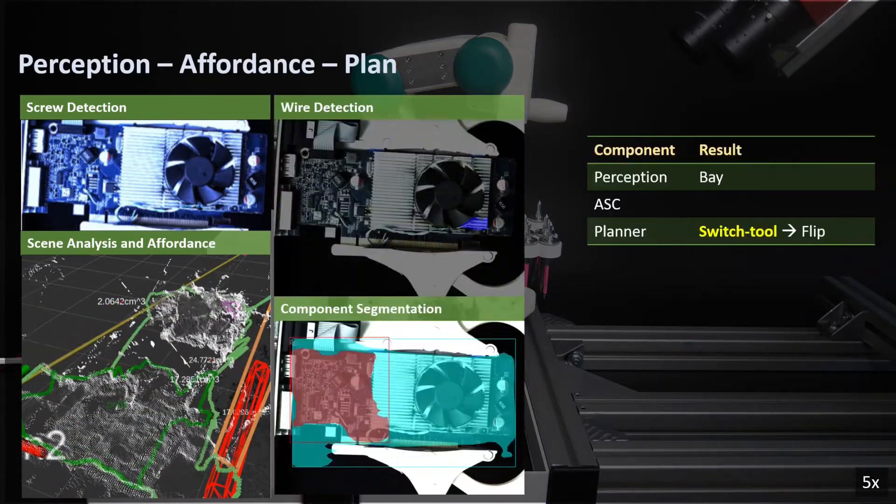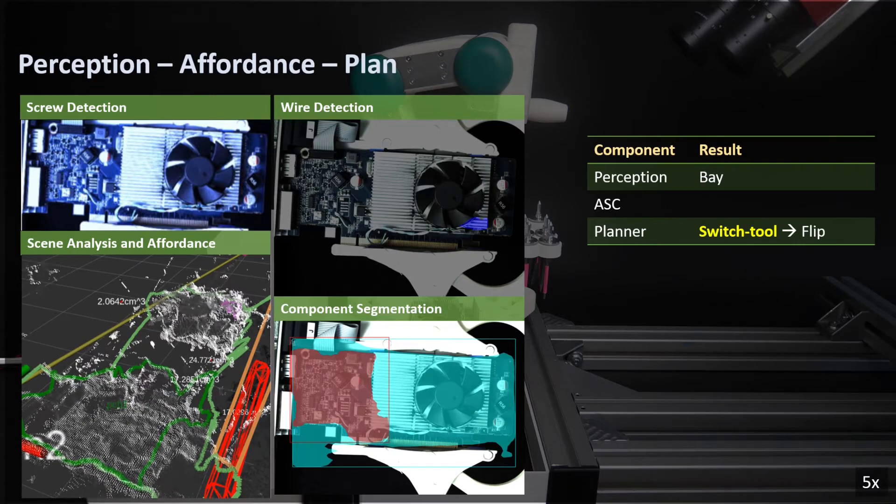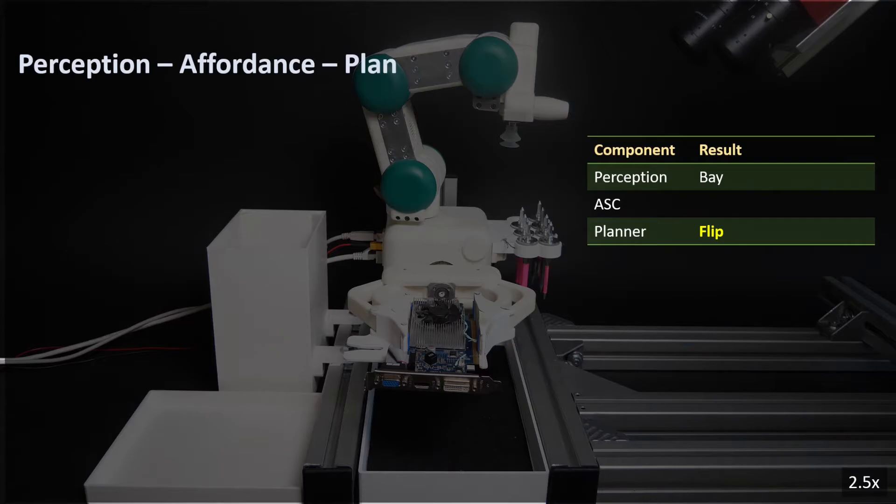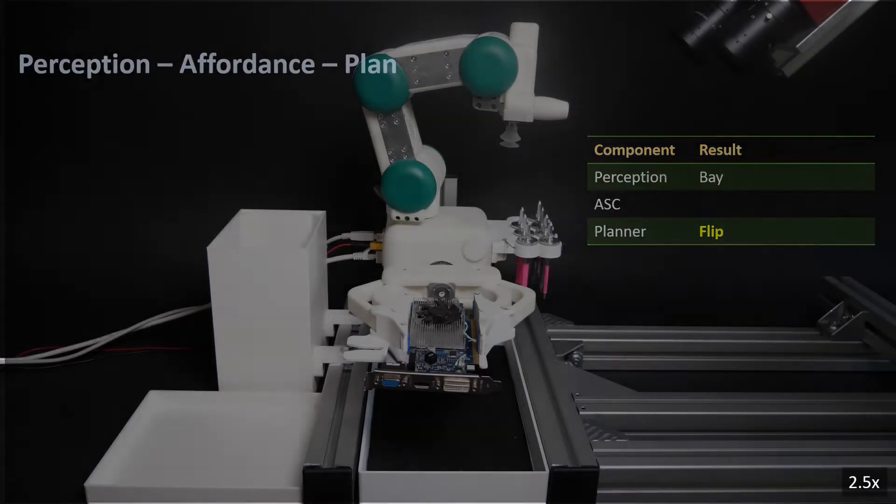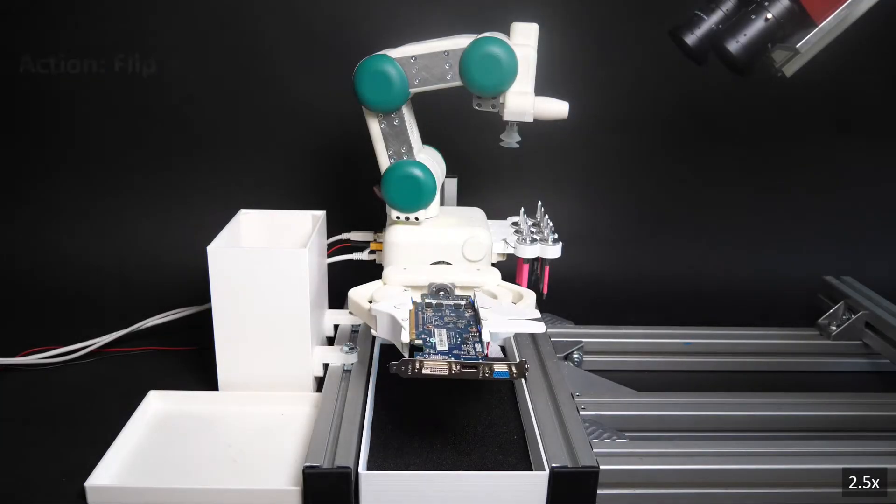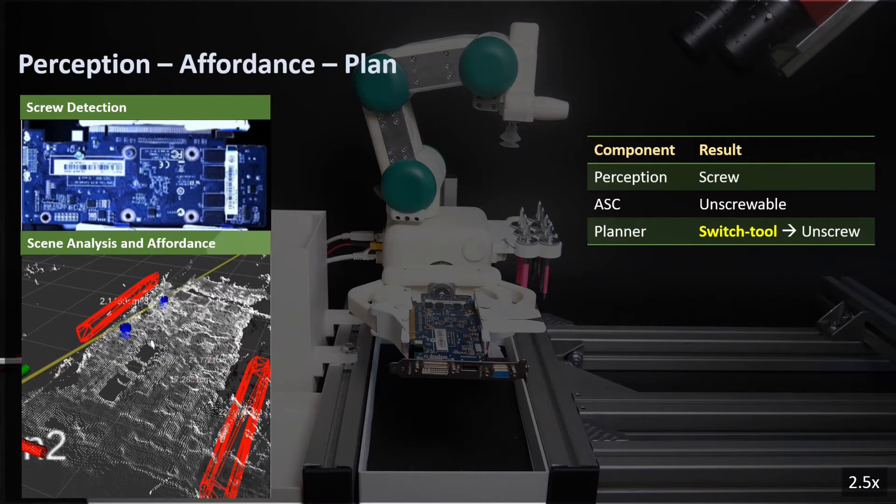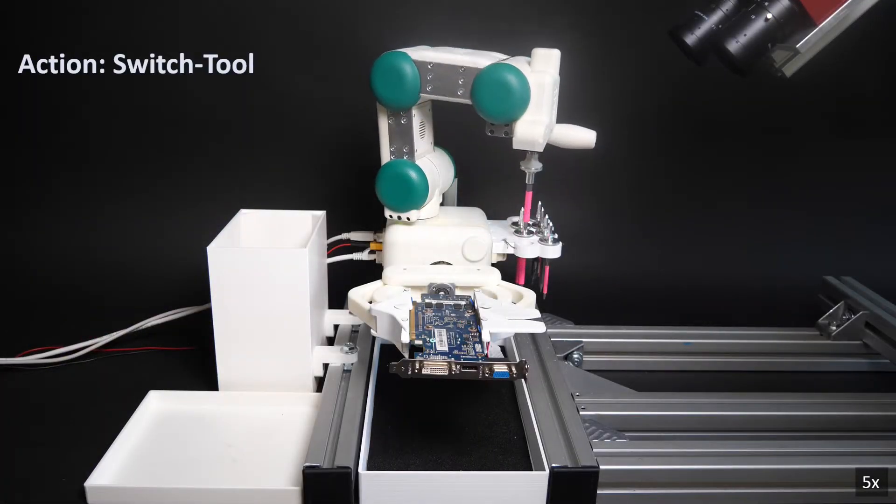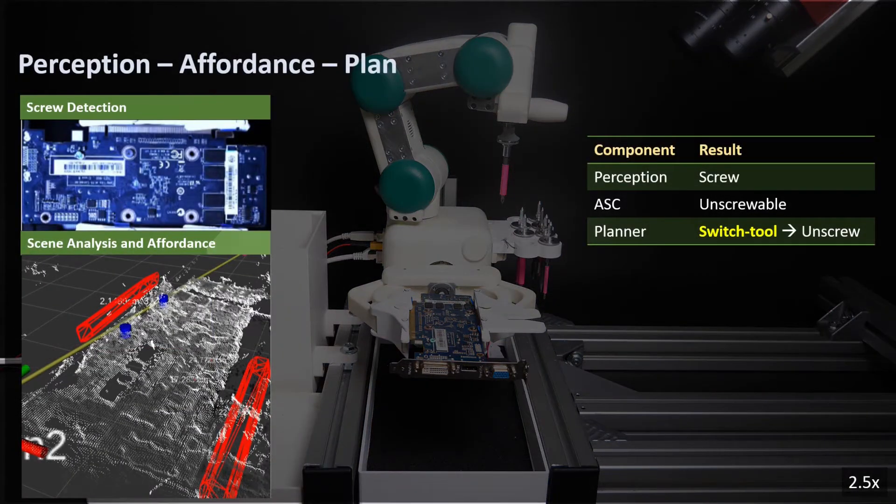On the top side, no viable actions are found anymore. The system flips the device. On the bottom side, no viable actions are found anymore. The system flips the device. The screw is found and the system switches the corresponding screwdriver to remove this screw.